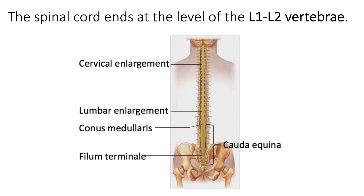The spinal cord narrows around the thoracic region. However, inferior to the thoracic region, there is another enlargement called the lumbar enlargement, because a lot of nervous tissue is present in that region to innervate the lower appendages — the legs. The most inferior point of the spinal cord is the conus medullaris, which is roughly around the L1 and L2 vertebrae.